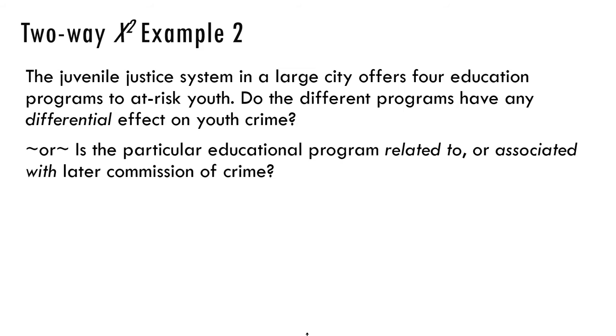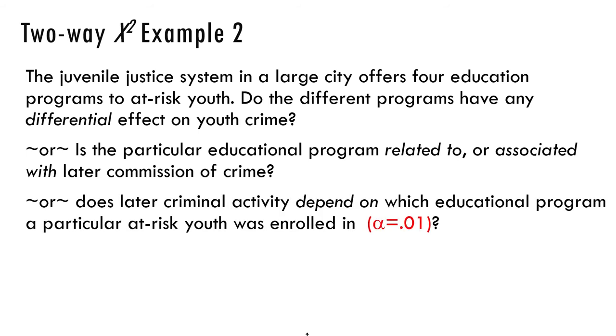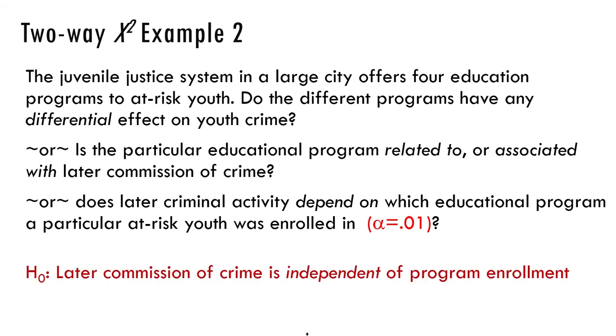Another way to think of that is, is the particular educational program related to or associated with later commission of crime? You can say, does later criminal activity depend on which educational program a particular at-risk youth was enrolled in? Let's say alpha is 0.01 because we're going to have a really gigantic N.